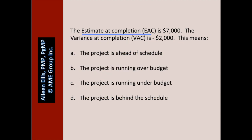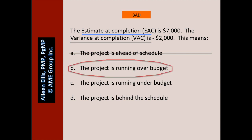The variance at completion is negative $2,000. This means — is this about cost or schedule? It's about cost. Is it good or bad? It's bad. A negative variance of $2,000 means we expect to overrun by $2,000. A: the project is ahead of schedule — we have no idea. B: the project is running over budget — yes, and we expect to overrun by $2,000. C: the project is running under budget — false. D: the project is behind schedule — we have no idea.